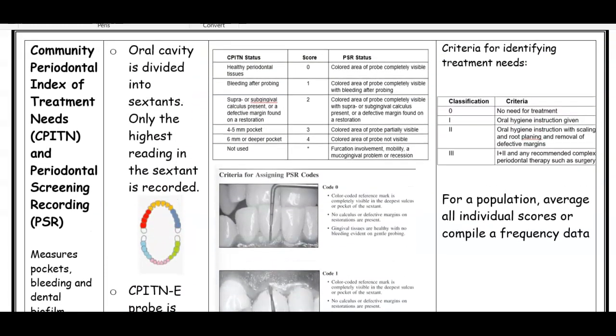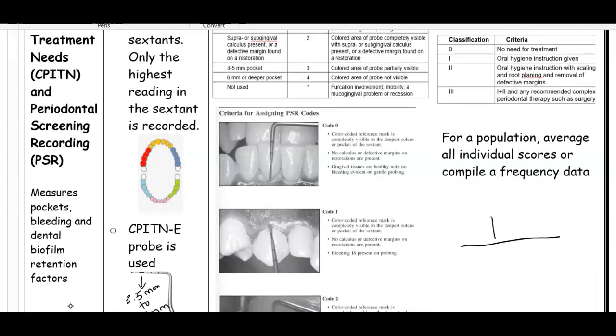The way this works is you probe each section with the CPITN probe, and you record the highest reading in each section. When you do a PSR, it looks like this - there's section one, two, three, four, five, and six. You probe the entire dentition in section one and record the highest reading. If the highest reading was a three, you would put a three there. It could be a two on section one, a three on section three, and so on. These are hypothetical readings.